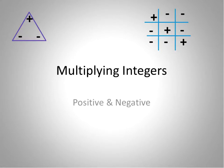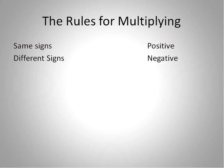Hello. This is Mr. Buffington. Welcome to our mini lesson on multiplying integers. Integers include positive and negative numbers and zero, and we're going to be multiplying all sorts of positive and negative numbers today.